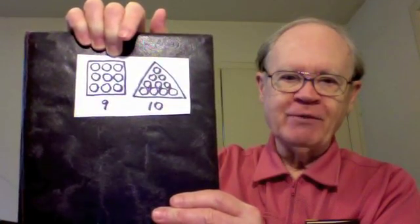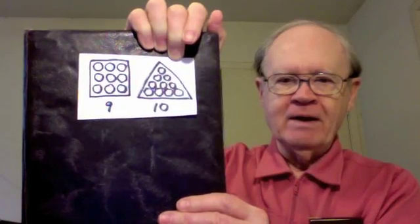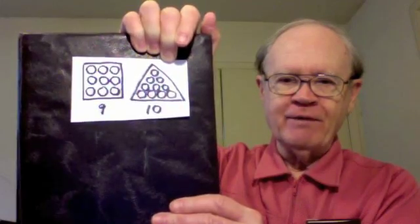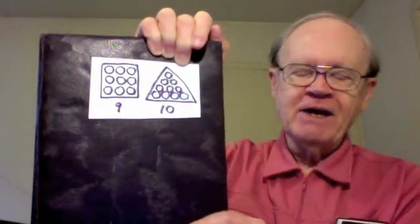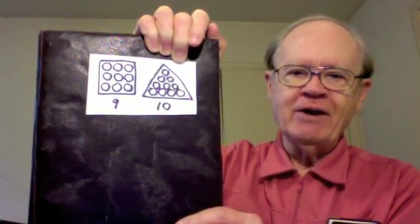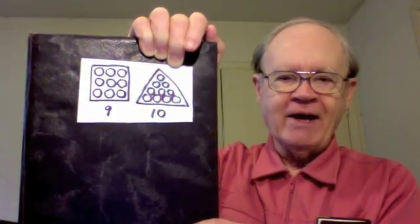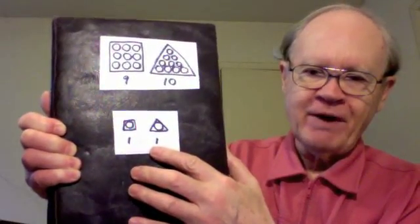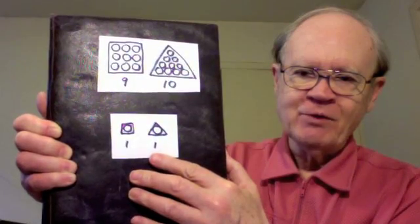In that challenge, I pointed out that, for example, nine is a square number because nine marbles can be arranged in rows and columns in a square. Ten is an example of a triangular number — notice that these ten marbles are arranged in the form of a triangle: four plus three plus two plus one. Nine is a square number but not triangular. Ten is a triangular number but not square. But there are numbers that are both square and triangular. The first such number in counting order is the trivial example one, which is both square and triangular. And the challenge was: find the next two numbers that are both square and triangular.